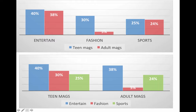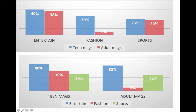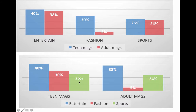There are a couple of different ways we could illustrate this with bar graphs. We can go entertainment, with teen mags in blue and adult mags in red: 40 versus 38, 30 versus 5, 25 versus 24 for the different kinds of magazines. Or we can organize it the other way around with teen versus adult as the grouping and entertainment, fashion, and sports as separate bars. Either way, you can see there's a real discrepancy in the difference between the bars, which is your visual cue that there's an interaction going on.